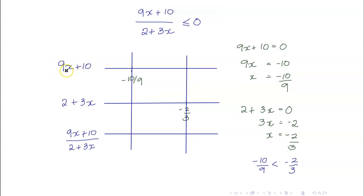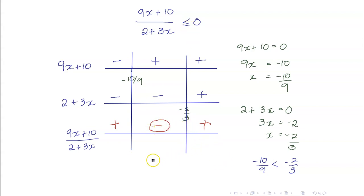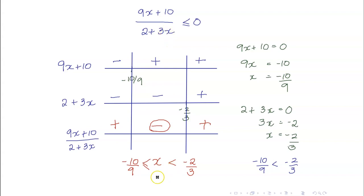For 9x plus 10, the coefficient of x is positive, so everything to the right of negative 10/9 is positive, everything to the left is negative. Similarly for 2 plus 3x, everything to the right of negative 2/3 is positive. So we have 2 negatives — positive; then 1 negative — negative; then positive. We want less than or equal to 0, so we take the negative interval: x between negative 10/9 and negative 2/3. We can include negative 10/9 (zero of numerator) but not negative 2/3 (zero of denominator). In interval notation: [−10/9, −2/3).